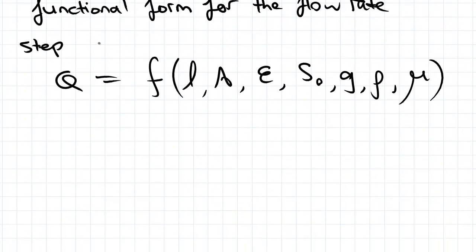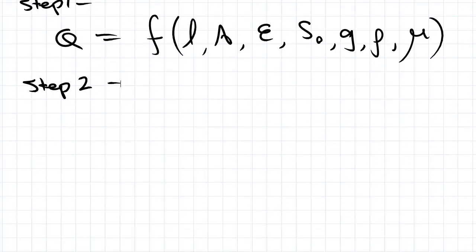We've done step one, step two we're going to find all the dimensions of these variables. So dimensions of Q, remember the square brackets mean dimensions of, that should be a Q.